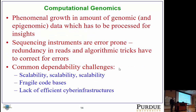Moving to computational genomics, a robust research area here at Virginia Tech. The big challenge has been the phenomenal growth in genomic and epigenomic data, as the process of collecting this data has become democratized — every lab now has access to sequencers. However, these sequencers are still quite error-prone: every one in a hundred bases may be missed, inverted, or have extraneous bases injected. Sophisticated algorithms have been devised to correct these errors, and the biggest dependability challenge is that any algorithmic technique must operate at very large scale.